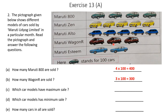Which car model has maximum sale? Maruti Zen has 5 cars shown, and counting Maruti Alto also gives 5. So Maruti Zen and Maruti Alto both have the same maximum number of sales — 5 cars each, meaning 500 each. Which car model has the minimum sale? It is Maruti Esteem, with only 2 cars shown in the picture.